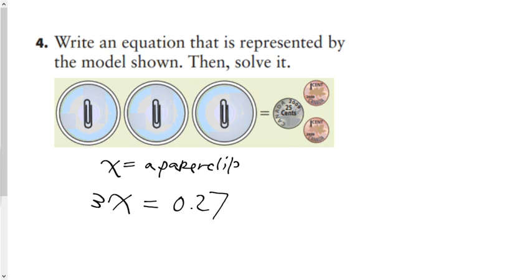Now some of you might have just used 27 without the decimal, but technically what it wants you to do in this particular chapter is get accustomed to using decimal amounts as values. So we have three paper clips or three x's is equal to 0.27. To isolate the value, we're going to divide both sides by three, and then therefore x is equal to 0.09. So therefore each paper clip would be worth nine cents.